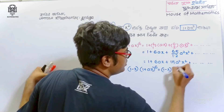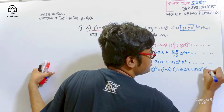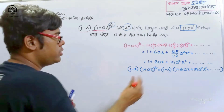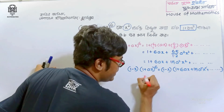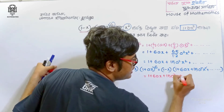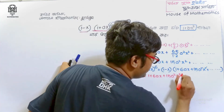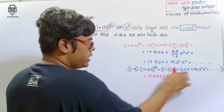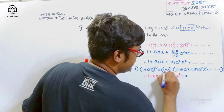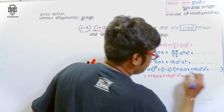So, 1 minus x into 1 plus x to the power 6 equals 1 plus 6ax plus 15a squared x squared plus dot dot dot, minus x, minus x into 6ax, minus 6ax squared, plus dot dot dot.